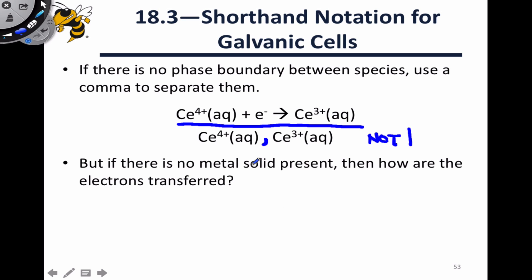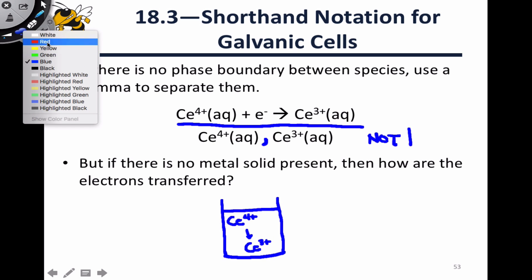The question is, if there's no metal solid present, then how do we actually transfer the electrons? Let's think about how this has to work physically. Cerium 4+, and cerium 3+, are both aqueous, which means they're both going to be an aqueous solution. As cerium 4+, gains electrons, it's going to form cerium 3+, which is also aqueous. But the electrons have to come from somewhere.